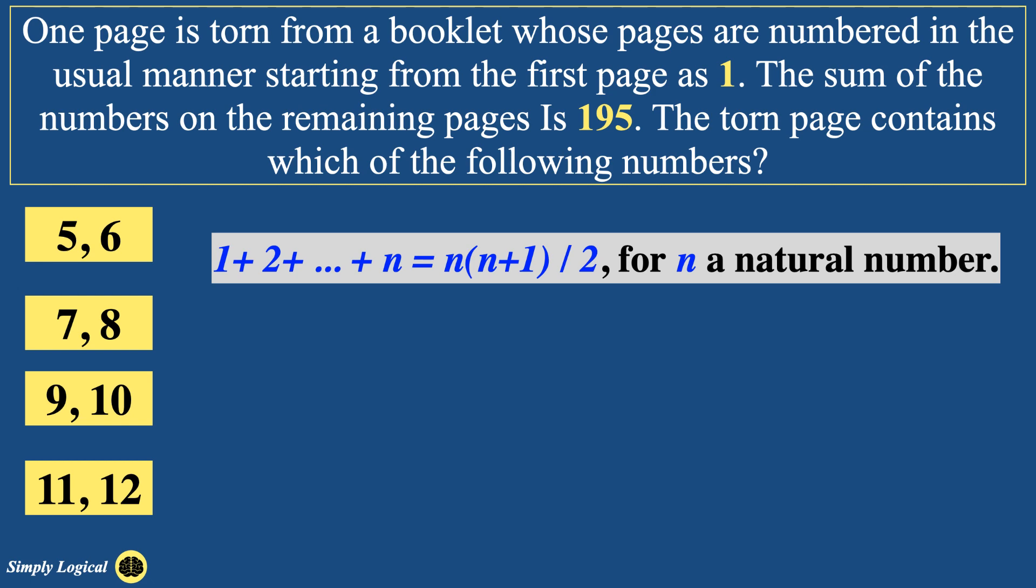Since page numbers are represented in the form of natural number series, without doubt, sum of all page numbers including torn page must be greater than 195. Now the task is to substitute for value of n till we get the number which is greater than 195. Now pick some random numbers.